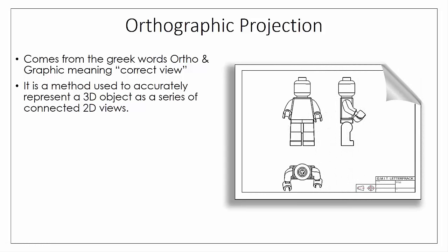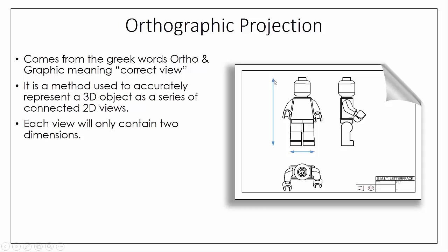What's simpler is to break the object down into a series of 2D views, looking in from different directions — these are our orthographic views. Each view will have only two dimensions. Looking from the front, we have height and width but no depth. From the side, we have height and depth but no width. From above, we have width and depth but no height. We need at least a minimum of two views to accurately represent the object.